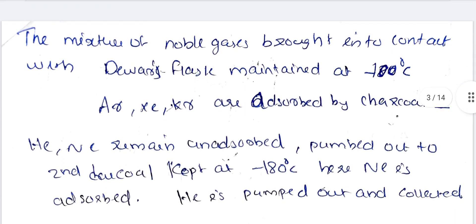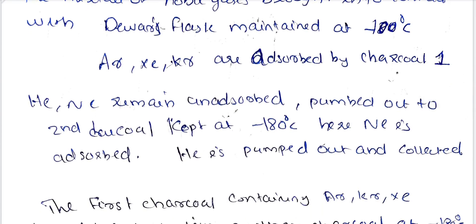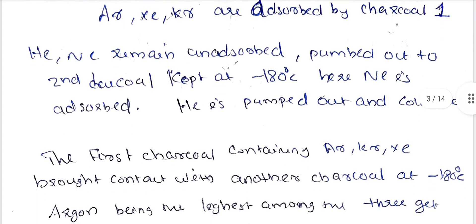The mixture of noble gases is brought into contact with a Dewar flask maintained at minus 100 degrees Celsius with charcoal. Argon, krypton, and xenon are absorbed by the first charcoal. Helium and neon remain unabsorbed, as helium is not absorbed by charcoal.